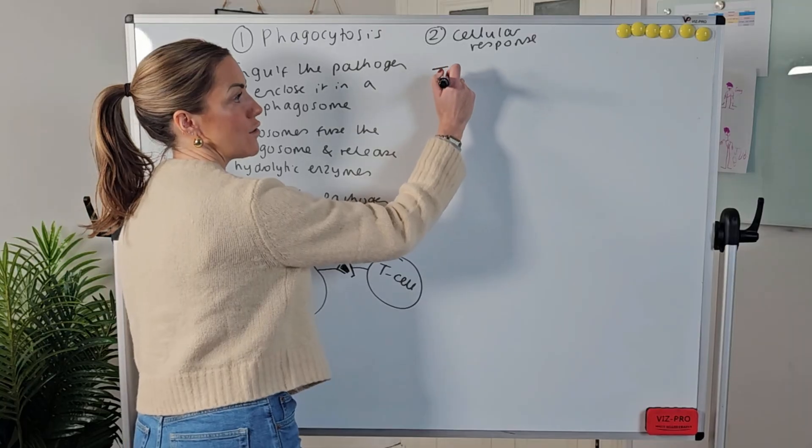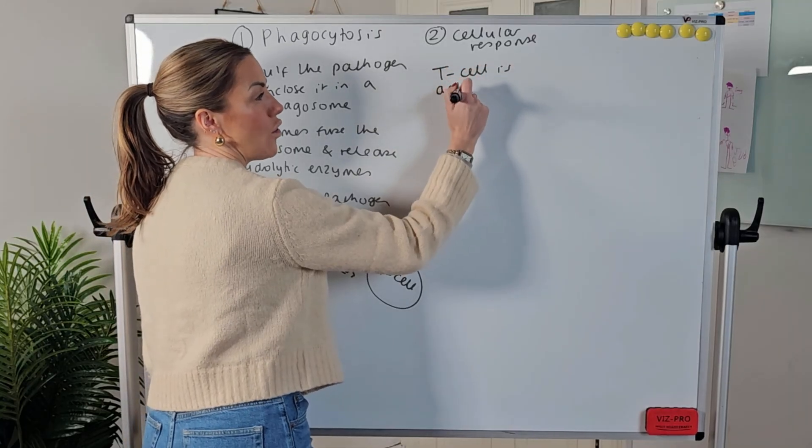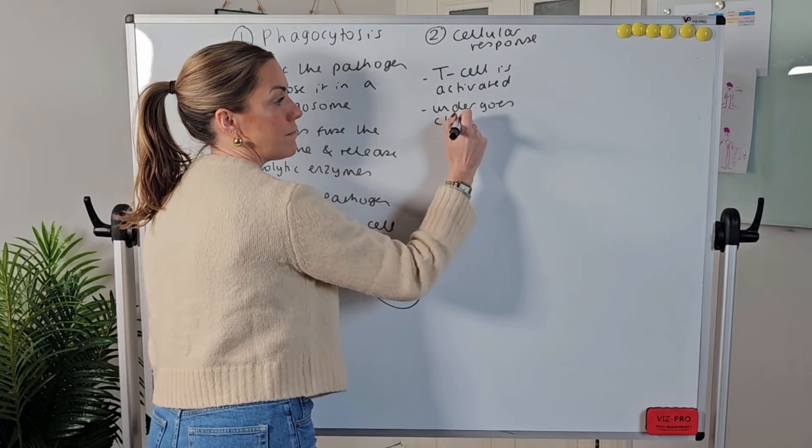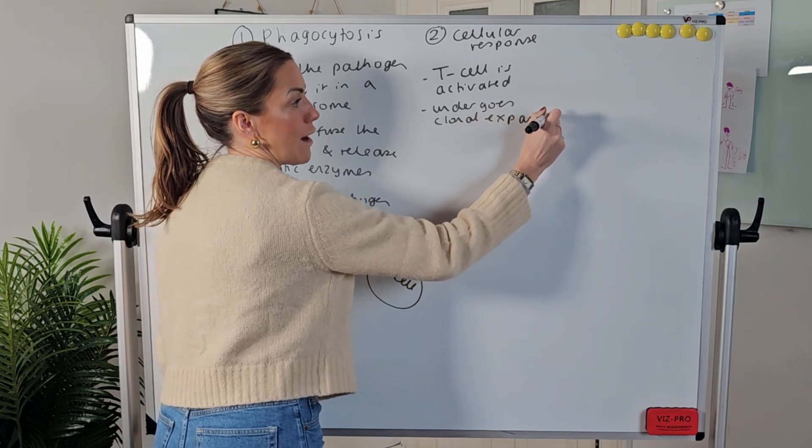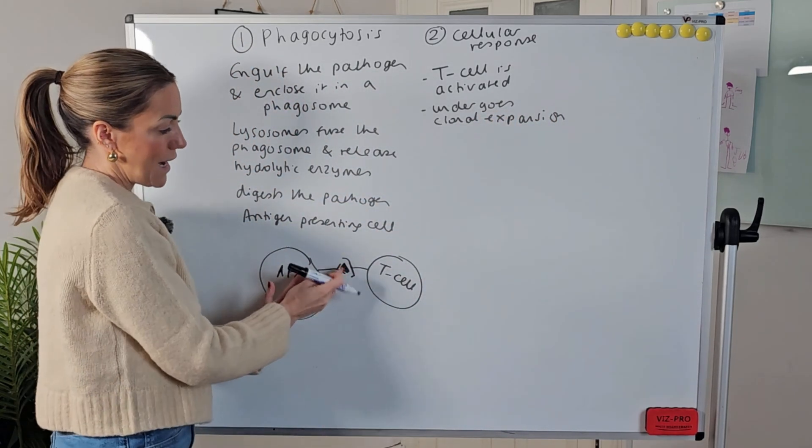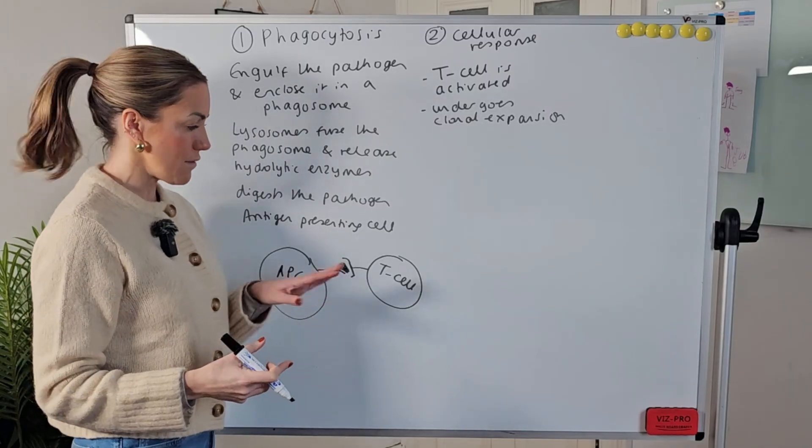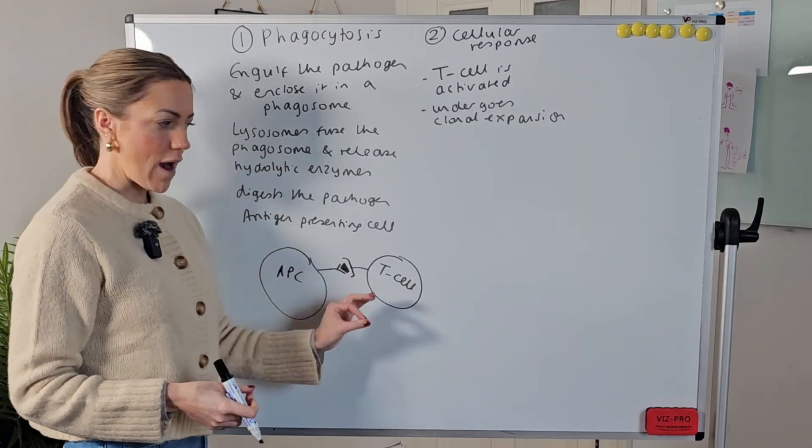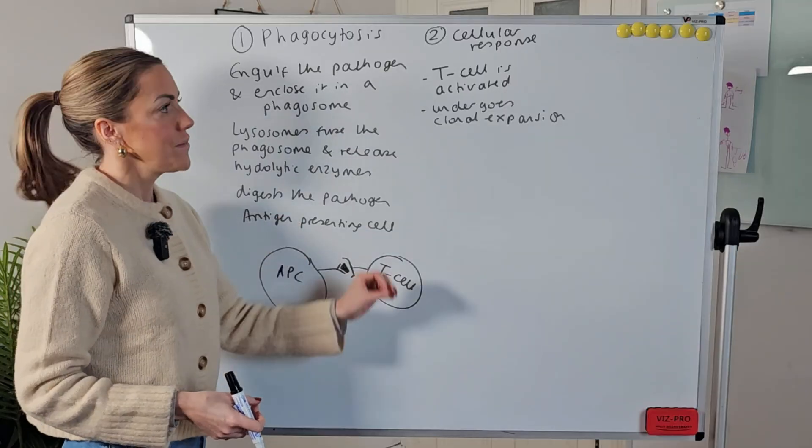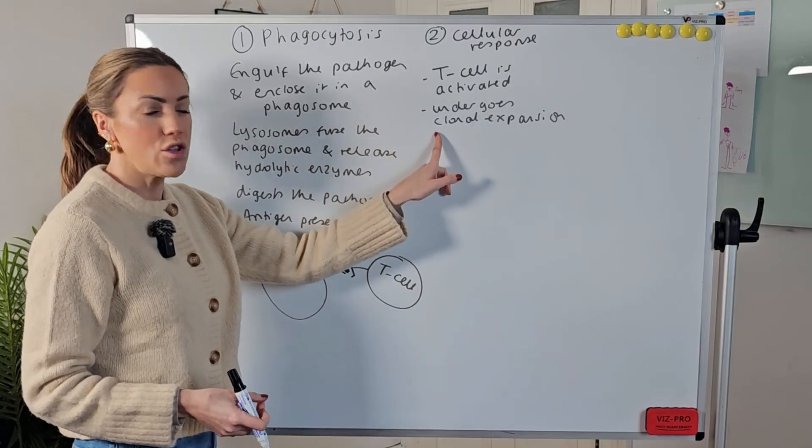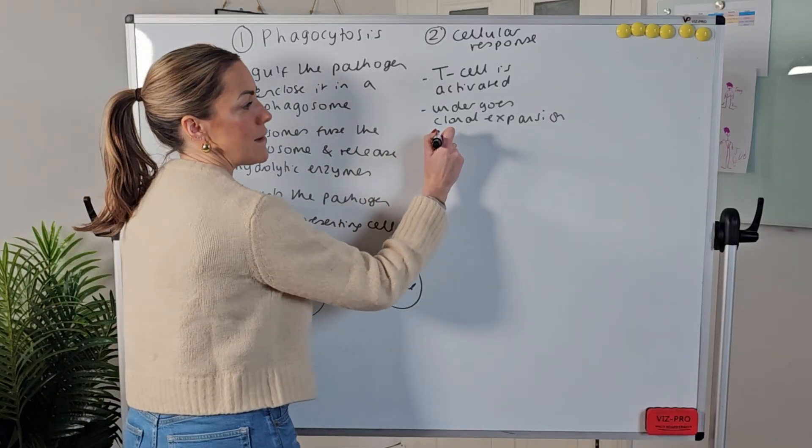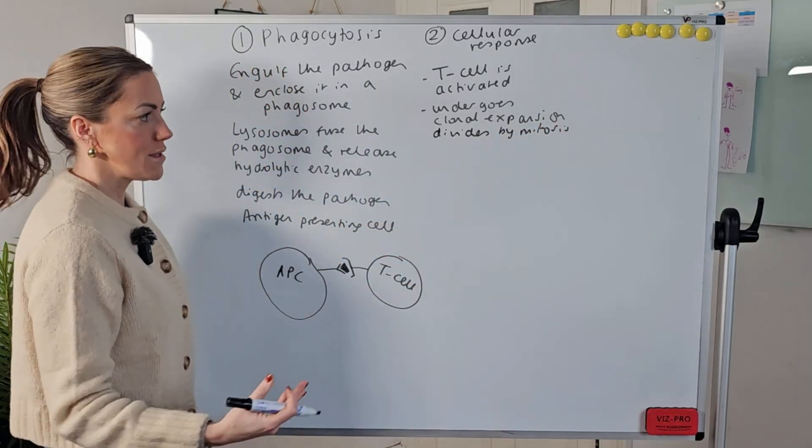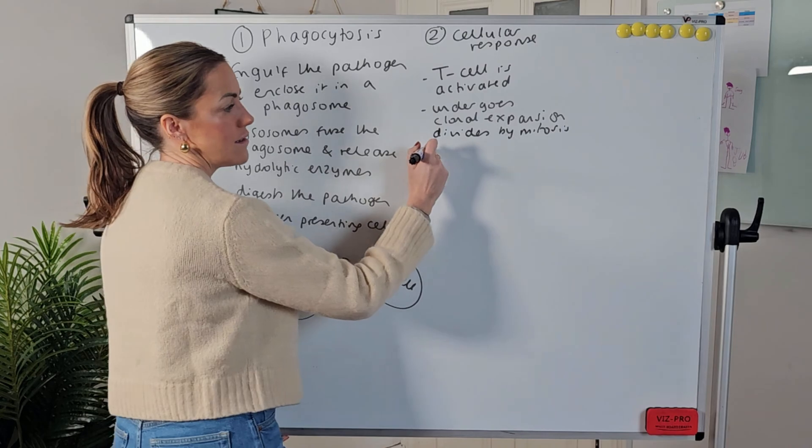So the T lymphocyte or the T cell is stimulated or activated it undergoes clonal expansion. Now you might have heard that word you might not have but when it binds to the foreign antigen we say it's been selected so that's called clonal selection it's almost like we're saying this is the one we need this is the one with the correct specific receptors we're going to select it so that would be clonal selection then it undergoes clonal expansion which basically means it's going to divide by mitosis or produce many clones of itself.